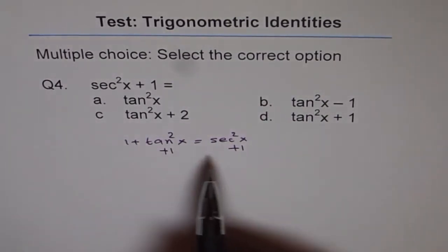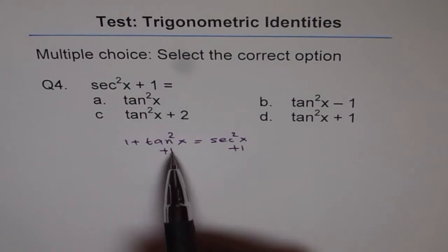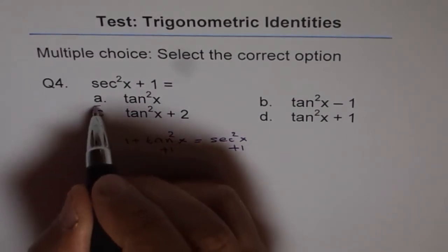If I add 1 to both sides, I get secant square x plus 1 equals tan square x plus 2, and so the option is C.